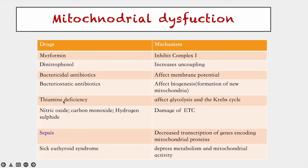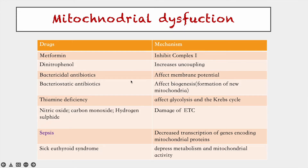There are many drugs, poisons, and other conditions where mitochondrial dysfunction is seen. Metformin inhibits complex 1 of the electron transport chain. Dinitrophenol increases uncoupling of the ETC. Bactericidal antibiotics affect membrane potential generation, while bacteriostatic antibiotics affect the formation of new mitochondria, known as biogenesis. Thiamine deficiency — thiamine being a co-factor of pyruvate dehydrogenase complex — affects glycolysis and the Krebs cycle. Nitric oxide, carbon monoxide, and hydrogen sulfide affect complex 4 and damage the ETC.